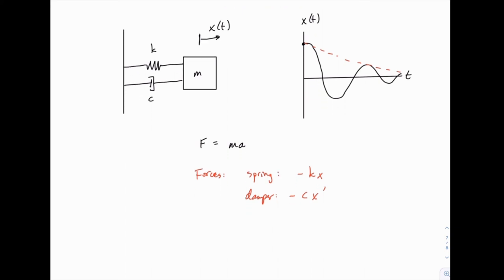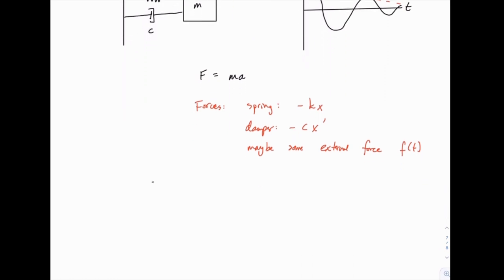And then there may be some external force to this, which we can call f(t). So if you add up all those forces—negative kx plus negative cx' plus f(t)—all of that equals mass times acceleration. And we know that acceleration is the second derivative of position, mx''. We can rearrange this a little bit to write it in a more familiar form.